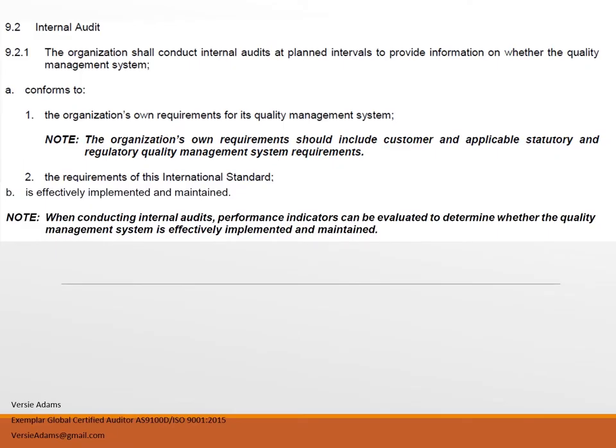Starting out with 9.2.1 of the standard: the organization shall conduct internal audits at planned intervals to provide information on whether the quality management system conforms to the organization's own requirements — which should include customer and applicable statutory and regulatory quality management system requirements — and the requirements of this international standard, and is effectively implemented and maintained. When conducting internal audits, performance indicators can be evaluated to determine whether the quality management system is effectively implemented and maintained.